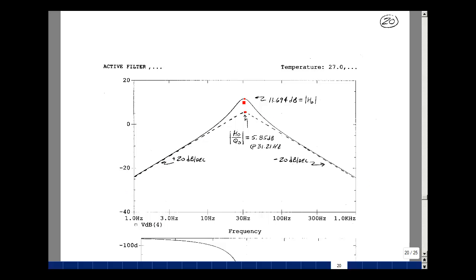If you take 20 log of the magnitude of H0, which is minus 3.846, you get 11.7 dB. I also drew the Bode approximations on top of my actual curve, and that has a slope of 20 dB per decade and minus 20 dB per decade.